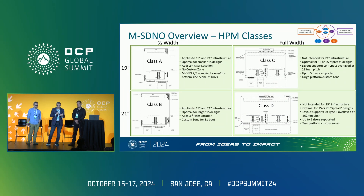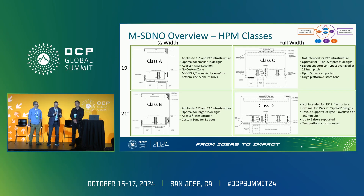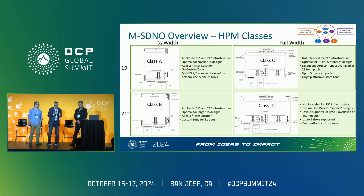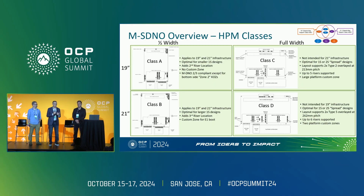In a matrix view of these classes: half-wides on the left, full-wides on the right, 19-inch at the top row, 21-inch in the bottom row. There is some crossover — A being the smallest, and because we have a consistent IO relationship, you can have a chassis designed for C that supports two As optionally. You can also have a class D system that could optionally support two Bs, or even two As.